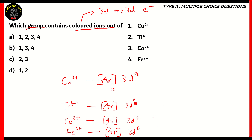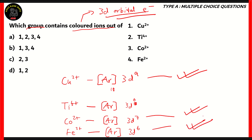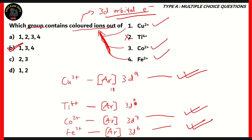Next, we have Co2+. Cobalt is atomic number 27. We take two electrons out of the 4s orbital, so you have [Ar] 3d7. Similarly, for Fe2+, iron is atomic number 26. Again, you take the electrons out of the 4s orbital, so the 3d will still have six electrons. So for colored ions, the 3d orbital should have electrons. As you can see, Cu2+, Co2+, and Fe2+ all have electrons in the 3d orbital. So therefore, 1, 3, and 4 are colored ions.